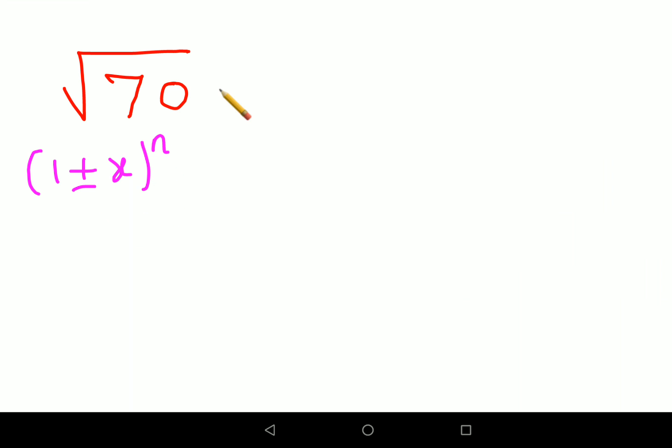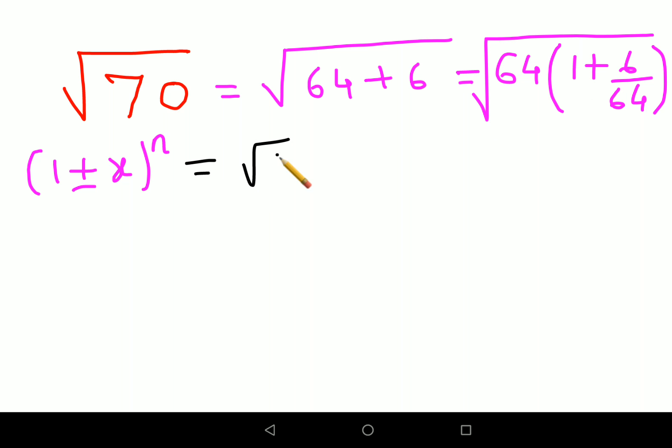So here, 70 can be written as 64 + 6. Everything has to be written as a perfect square plus or minus some value. Now what we'll do is we'll take 64 outside, I'll be left with 1 + 6/64, everything is still under the root. So now let's split the root. What we'll get in this case is √64 and I'll write this 1 + 6/64 raised to half.